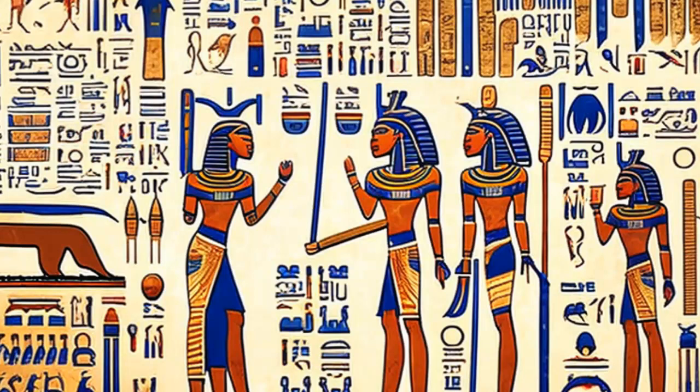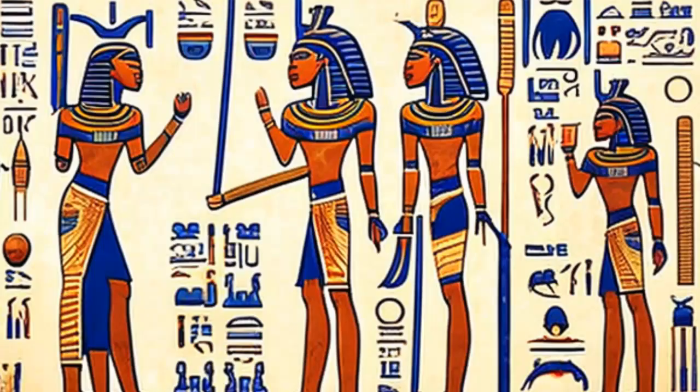From hieroglyphics to demotic, the ancient Egyptian language has left behind a wealth of literature, inscriptions, and documents that provide insights into the culture and society of the Pharaonic era. We'll examine the origins of the language, its development over time, and its decline in the late period.